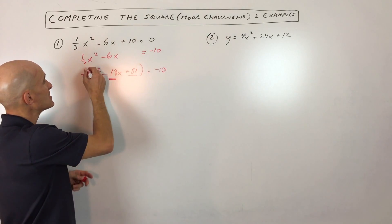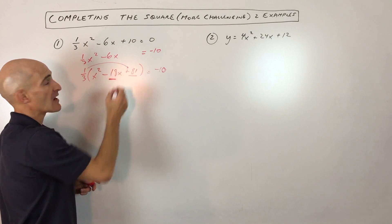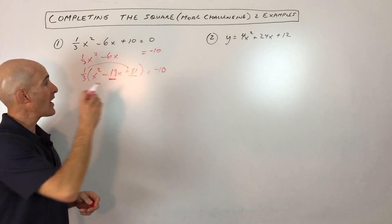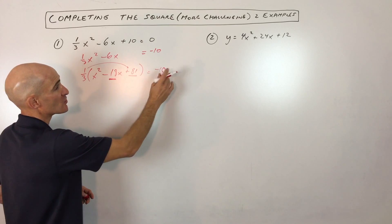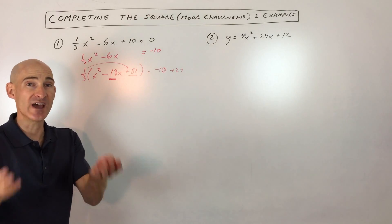Now because this is in parentheses, this is really one-third times 81. So out of thin air we're adding one-third times 81 which is 27 to the left side of the equation. So to counterbalance that we want to add 27 to the right side.